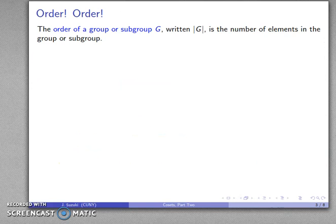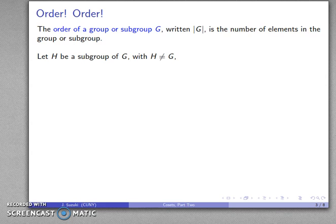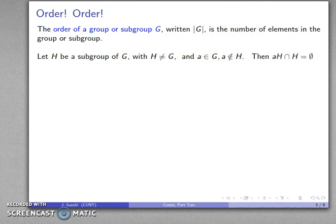The order of a group or a subgroup is written this way — you might think of it as |G|. It's the number of elements in the group or subgroup. Suppose I have a subgroup H of G with H not equal to G, and I find the coset aH. Because a is not in H, the coset and the subgroup have to be completely disjoint.